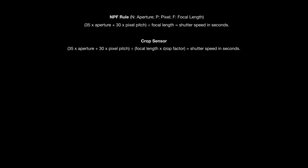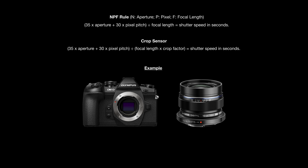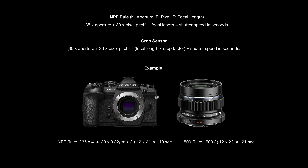Let's apply the NPF rule to our Olympus example with the 12mm MZuiko lens. At aperture f/4 and a pixel size of 3.32 micrometers, divided by the full-frame equivalent focal length of 24mm, the formula gives roughly 10 seconds. Compared to the 500 rule's 21 seconds, this is substantially shorter — which is exactly why the NPF rule was created. People found that applying the 500 rule universally could still result in stars appearing as lines.